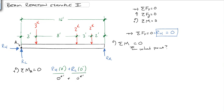And then go left to right. So we start off with the three kips. And how far away is the three kips from point A? Three feet.